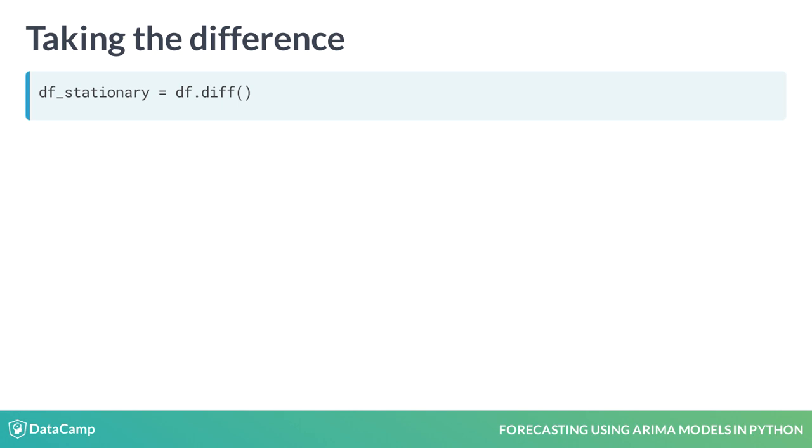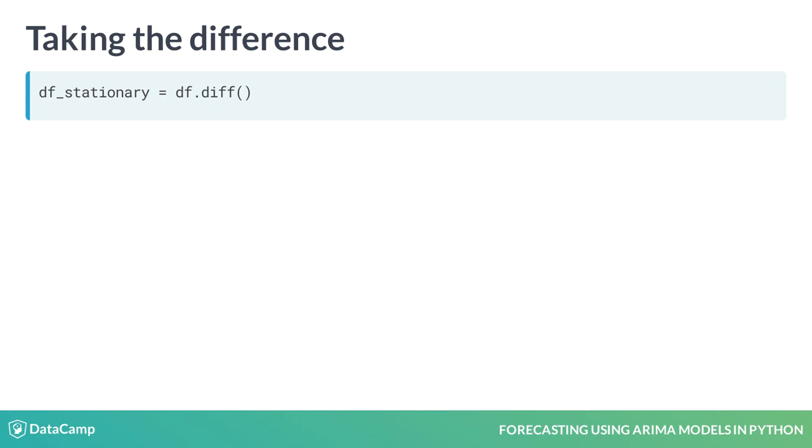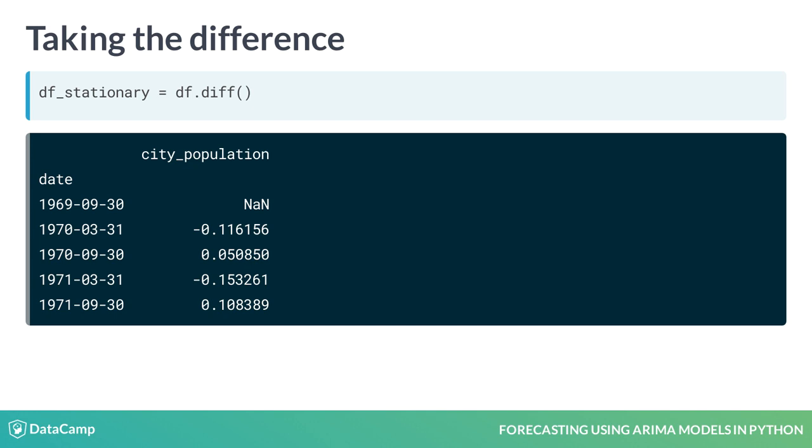We can do this using the .diff method of a pandas dataframe. Notice that this gives us one NaN value at the start, since there is no previous value to subtract from it. We can get rid of this using the .dropna method.